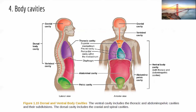The next topic is body cavities. There are a few main body cavities. The cranial cavity houses the brain. The vertebral cavity contains the spinal cord. Together, these are in the category of dorsal body cavities — because they're on the dorsal, or back, side of your body.